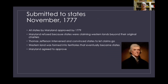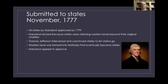The document was submitted to all of the states in November of 1777. All states except Maryland had approved it by 1779. Maryland was holding out because many other states were claiming all of the land to the west of their original charter boundaries, and Maryland said that was not going to work.